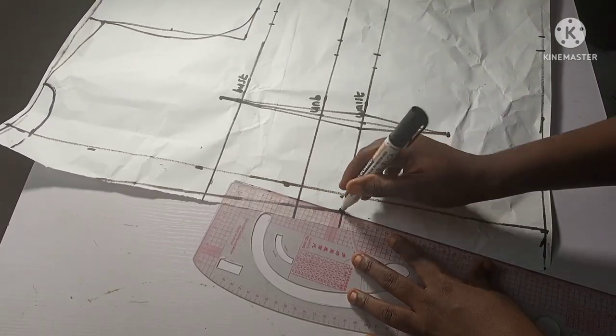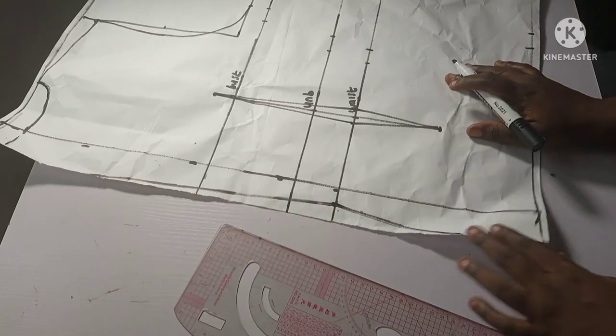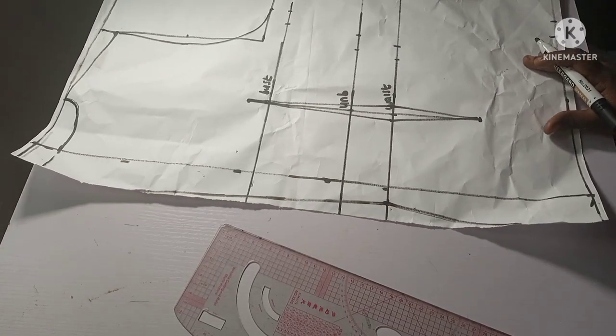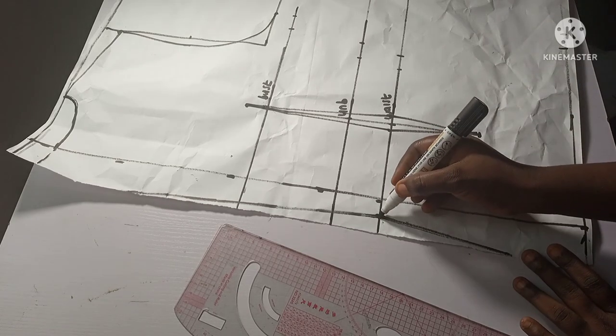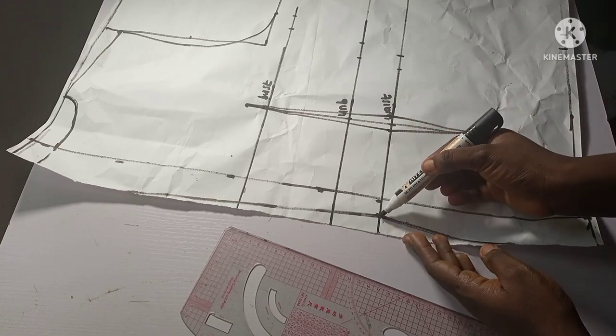And then from that same spot, I'll connect and I'll stop before I get to my blouse length just this way. I hope you understand what I did. I just got my 0.75 inches from the beginning of the line.